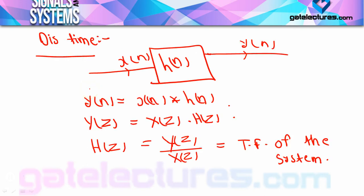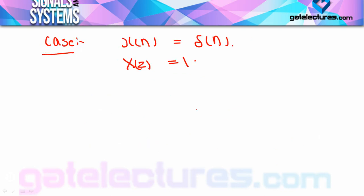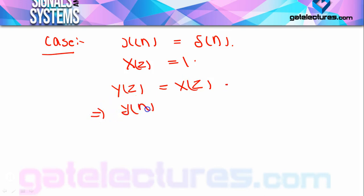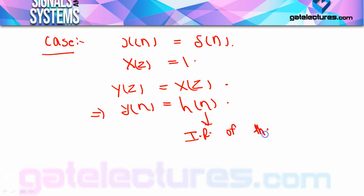Discrete case में Y(z) = X(z)·H(z) में X(z) = 1 put करें तो Y(z) = H(z), यानी y[n] = h[n]। इसका मतलब y[n] response है impulse input के लिए, इसलिए y[n] कहलाता है impulse response of the system। इसीलिए h[n] भी impulse response of the system कहलाता है। चाहे continuous हो या discrete, h वाला term कहलाएगा impulse response of the system — continuous के लिए h(t) और discrete के लिए h[n]।